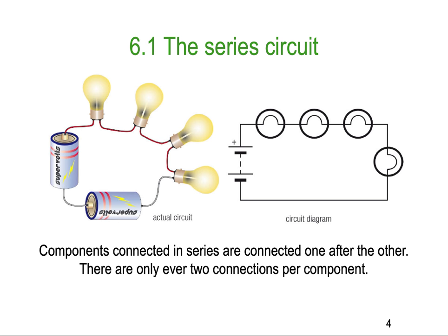So, 6.1, the series circuit, and here you can see the components are connected in series, are connected one after the other. There are only ever two connections per component, so we can't have any more than two, we can't have three or four.